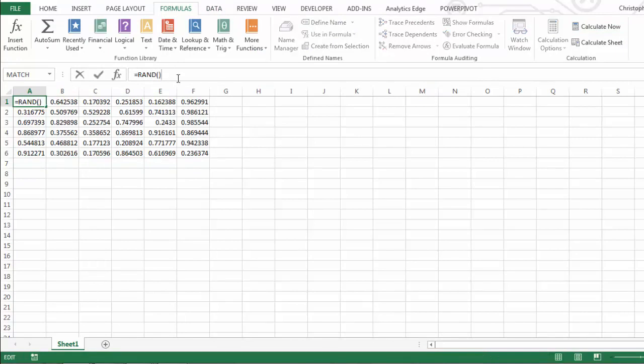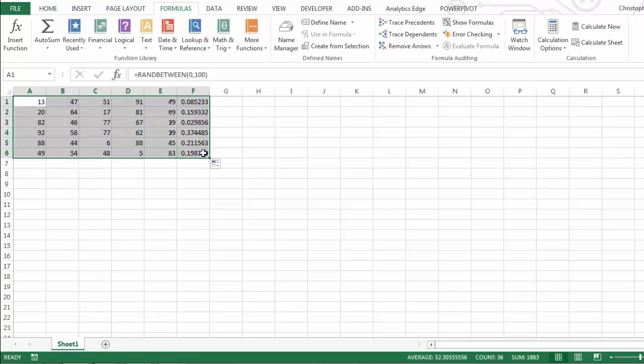Now I'll just change. Instead of RAND, I'll do RANDBETWEEN, and why don't we just say 0 to 100, and then close the parentheses. And once I apply that to the same range, you'll see that I'm dealing with a similar random number generator, except in this case, all my numbers are whole numbers between 0 and 100.